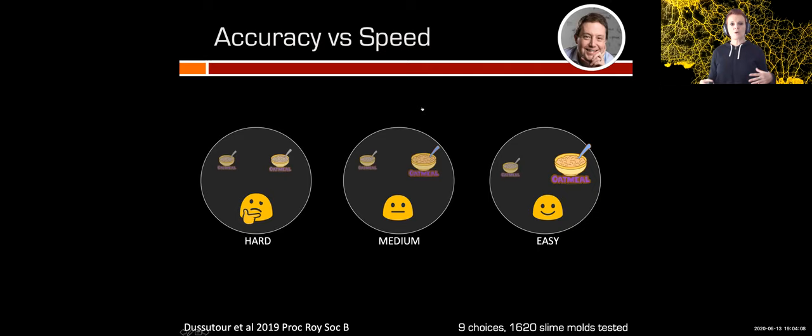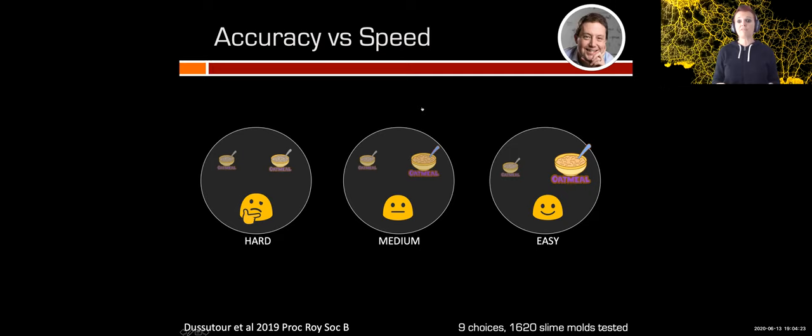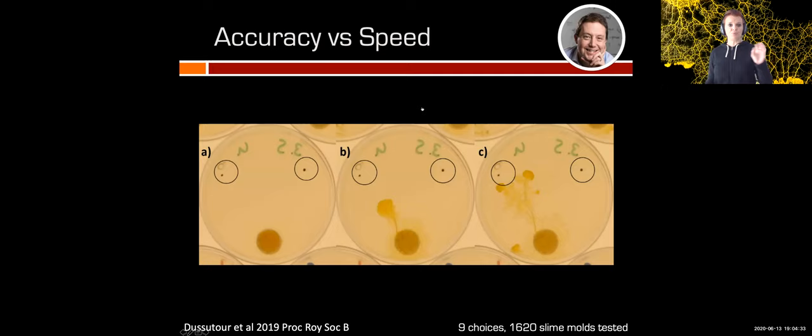We then faced our strains with different choices — nine in total. Choices were considered hard when the food concentrations between options were almost equivalent, and easy when the difference in concentration between the two food sources was really large. In the setup, the slime mold is placed with two food sources two centimeters away. Usually the slime mold grows a pseudopod with a fan-shaped structure, and as soon as it touches a food source, we say it has made a decision.